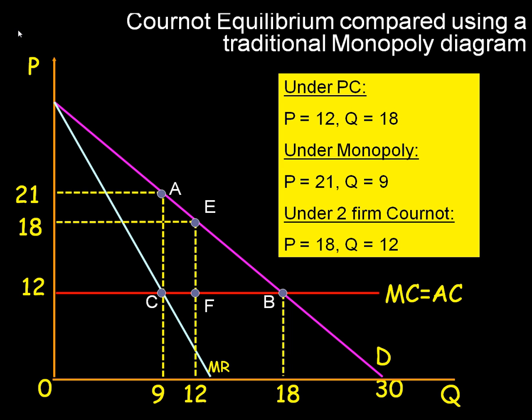When we compare monopoly with perfect competition, and when we compare the Cournot duopoly with perfect competition and monopoly, we get some quite interesting results. The welfare loss from monopoly is area A, B, C — prices are greater than marginal costs and outputs are lower. But under a two-firm Cournot, the welfare loss is smaller — it's area E, F, B. So under Cournot assumptions, where firms are competing on non-price terms — on sales volume in this case — the welfare loss falls.